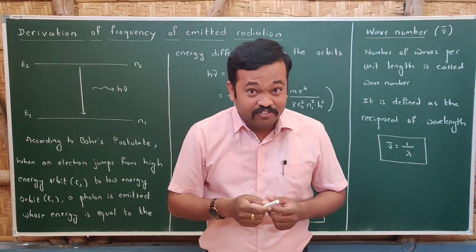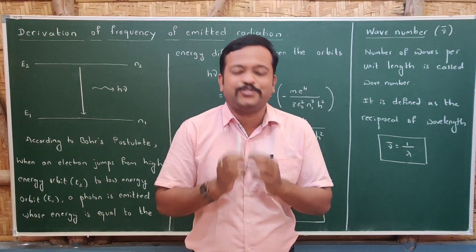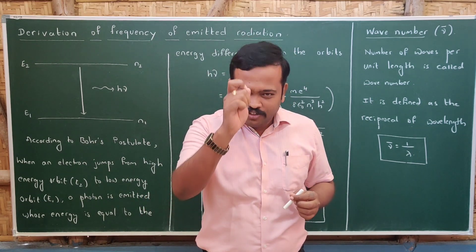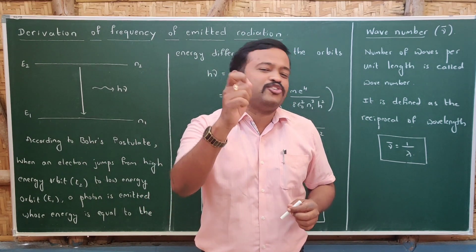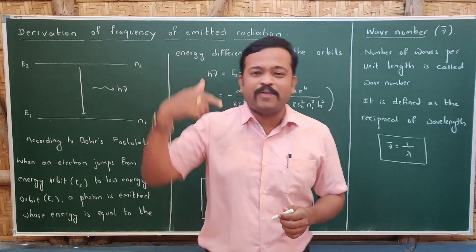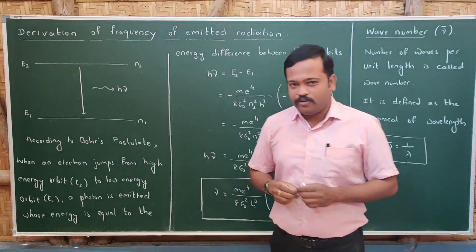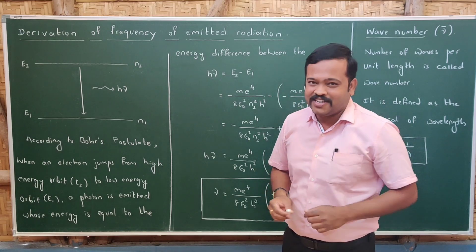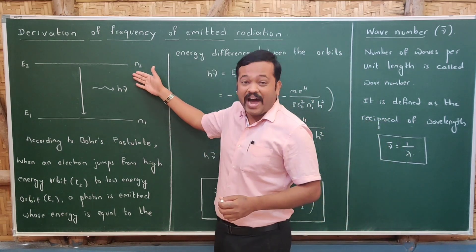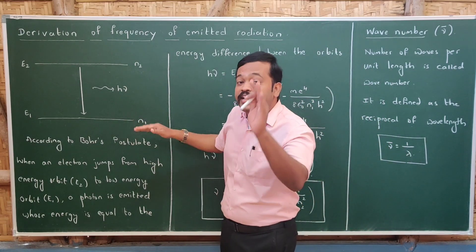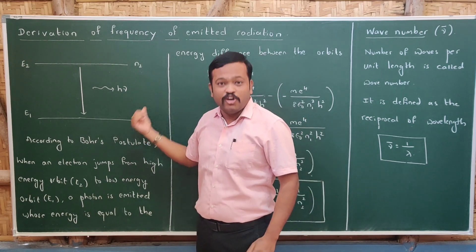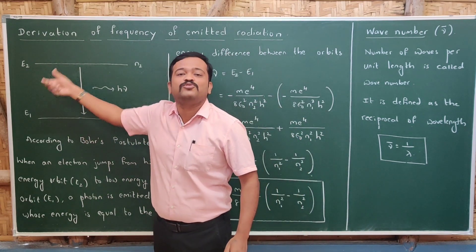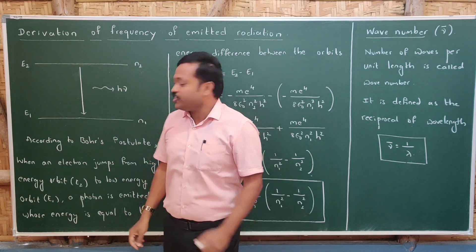Welcome to part five of the chapter on atoms. Bohr's third postulate gives an idea about what is the energy of the radiation emitted when an electron jumps from a high energy orbit to a low energy orbit. When an electron jumps from high energy orbit to the low energy orbit, it emits electromagnetic radiation whose energy is equal to the energy difference between these two orbits.